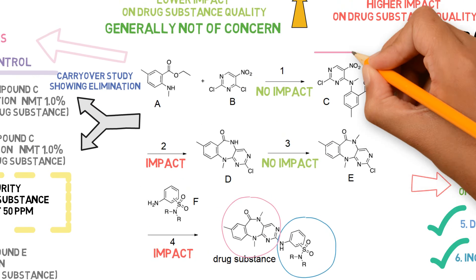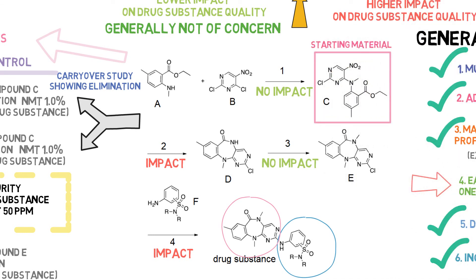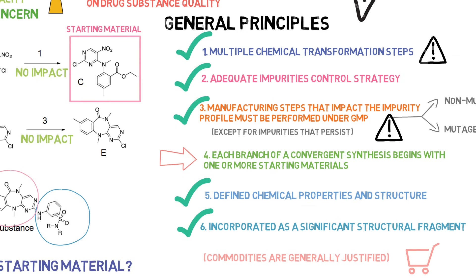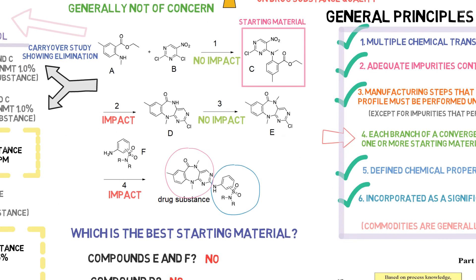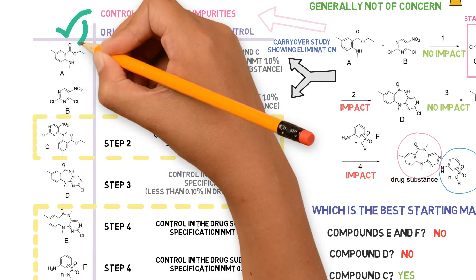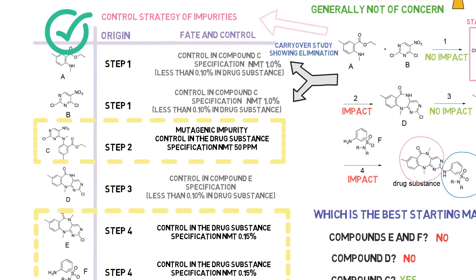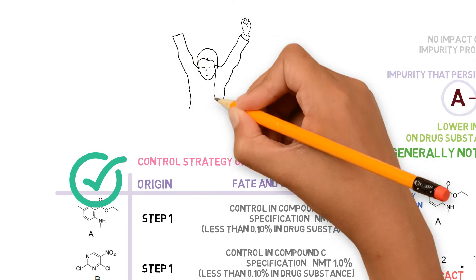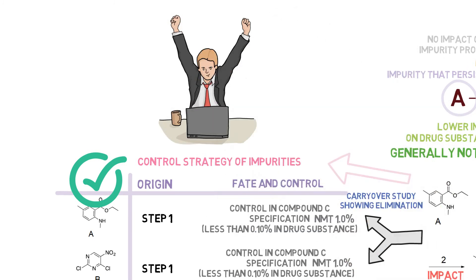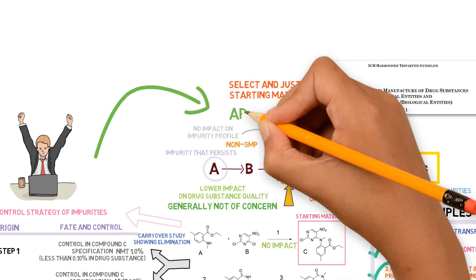This is an example of how to justify the selection of a starting material for a synthetic manufacturing process. All the principles of ICH Q11 should be followed. However, the key point is always to have a clear control strategy for impurities, with appropriate and justified specifications for the drug substance, intermediates, and starting materials. This way, regulators can be confident that there is no quality and safety concern, and higher are the chances of approval of the proposed starting material.